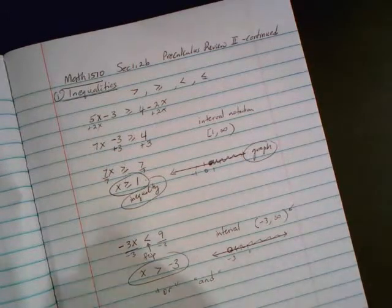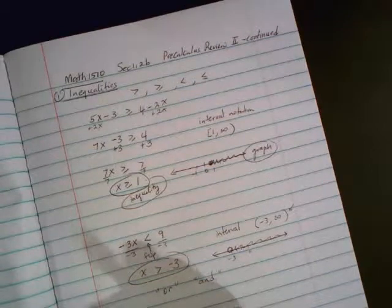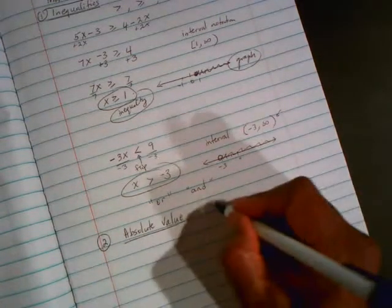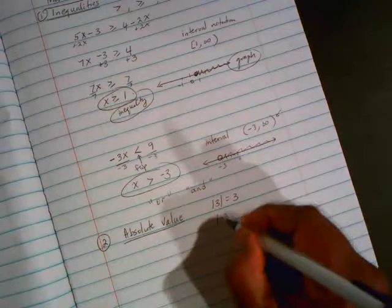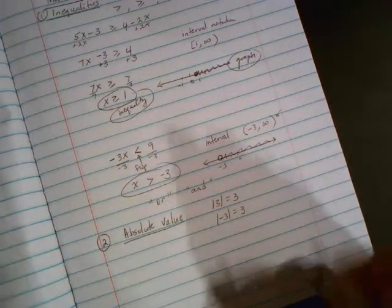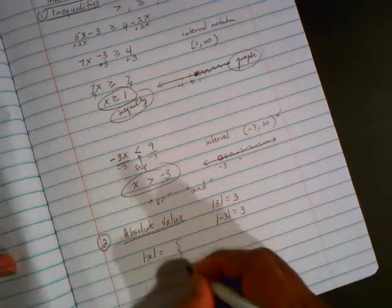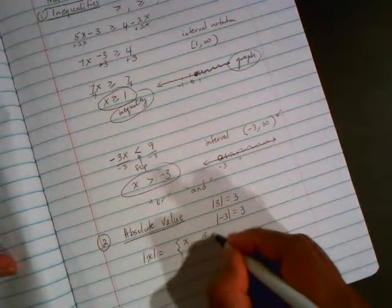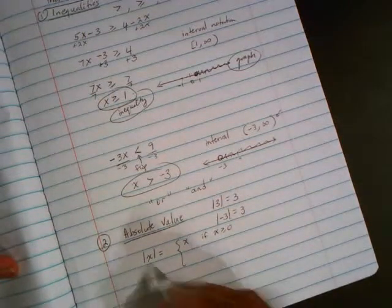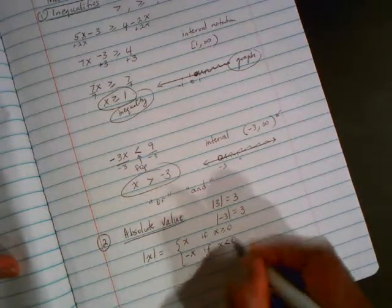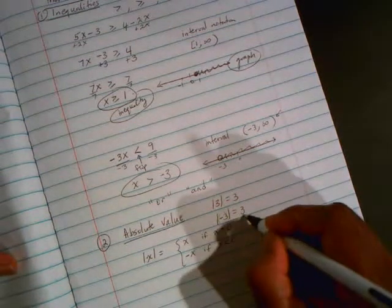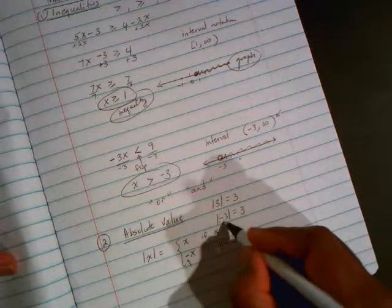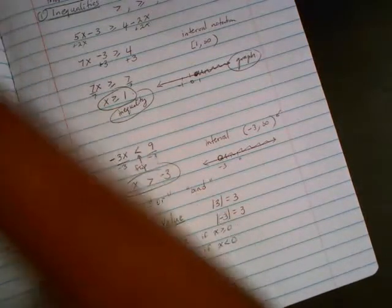But before we do that, the second topic in this section is that of absolute values. And you've seen this in the past. The absolute value of a number is its distance from 0. So the absolute value of 3 is 3. The distance of 3 on the number line from 0 is 3 units. Absolute value of negative 3, the distance is 3. In general, the absolute value of x is itself, it's x, if x is positive, greater than or equal to 0. But the absolute value of x is its negative if the inside is less than 0. So since negative 3 was less than 0, the answer was not itself, but its opposite. That's what this is saying. So the opposite of negative 3 is 3.